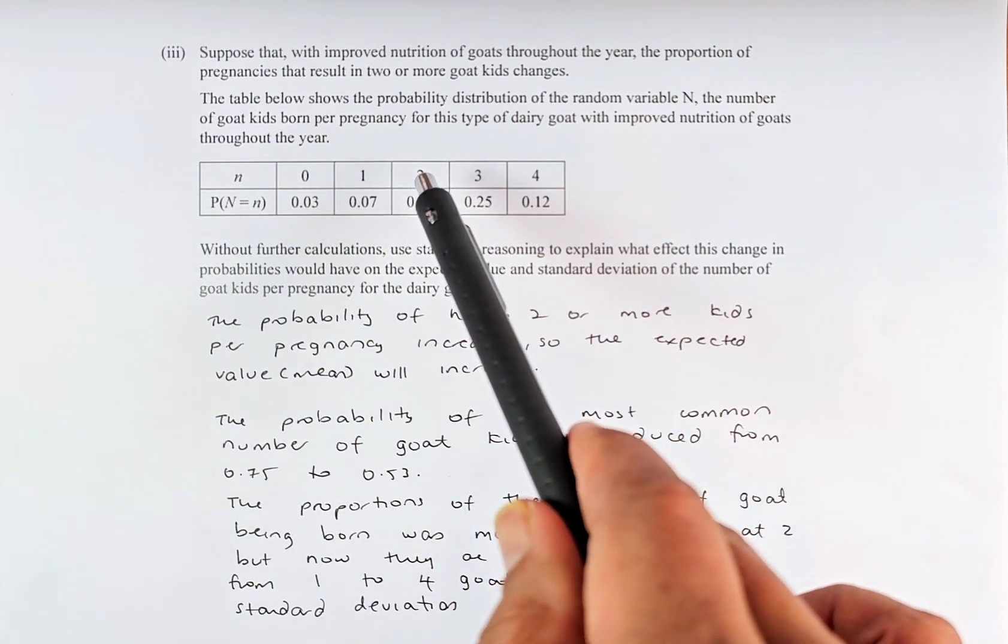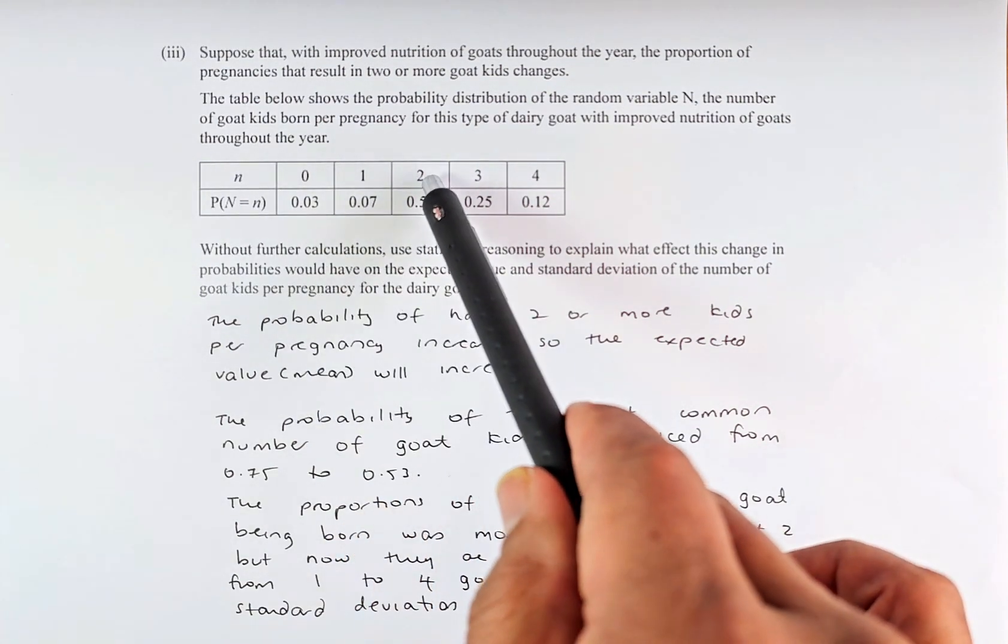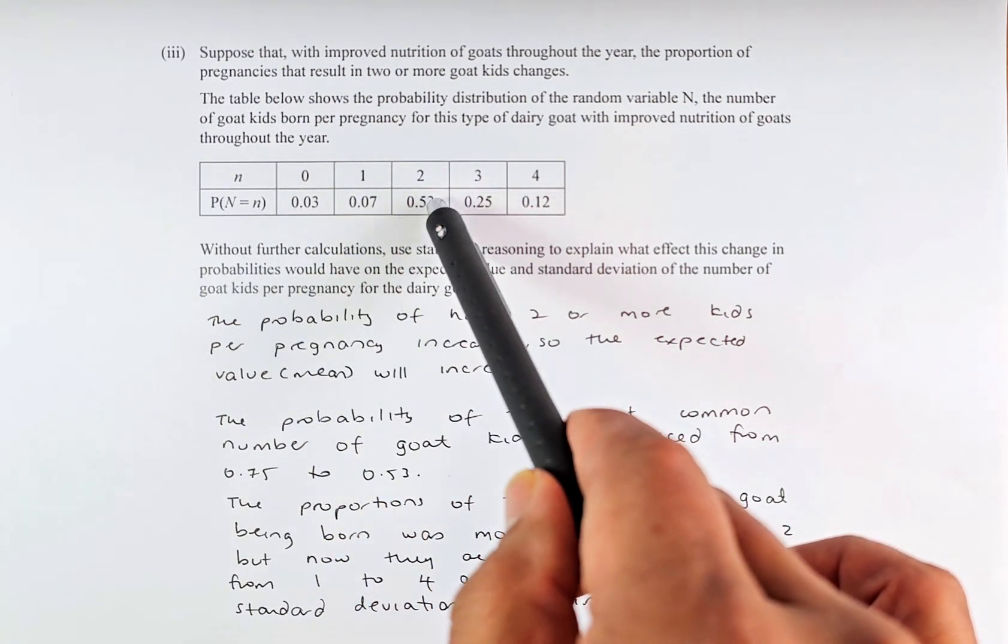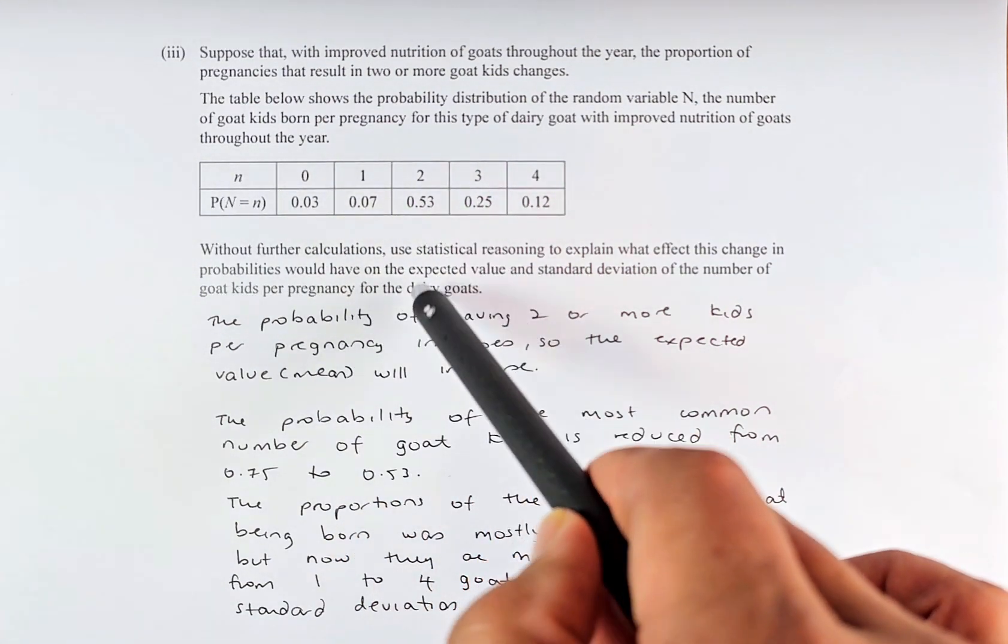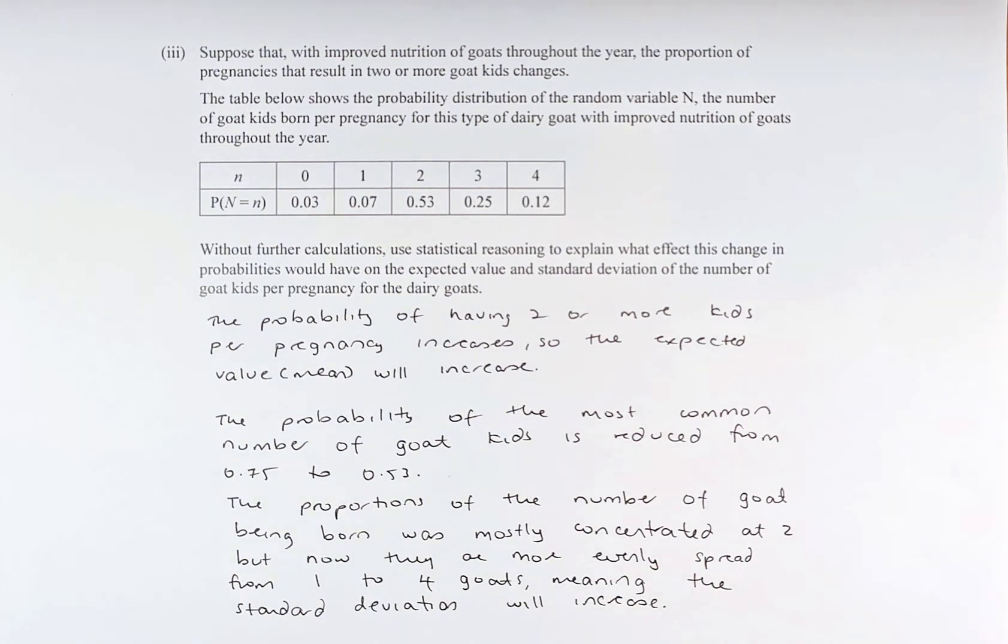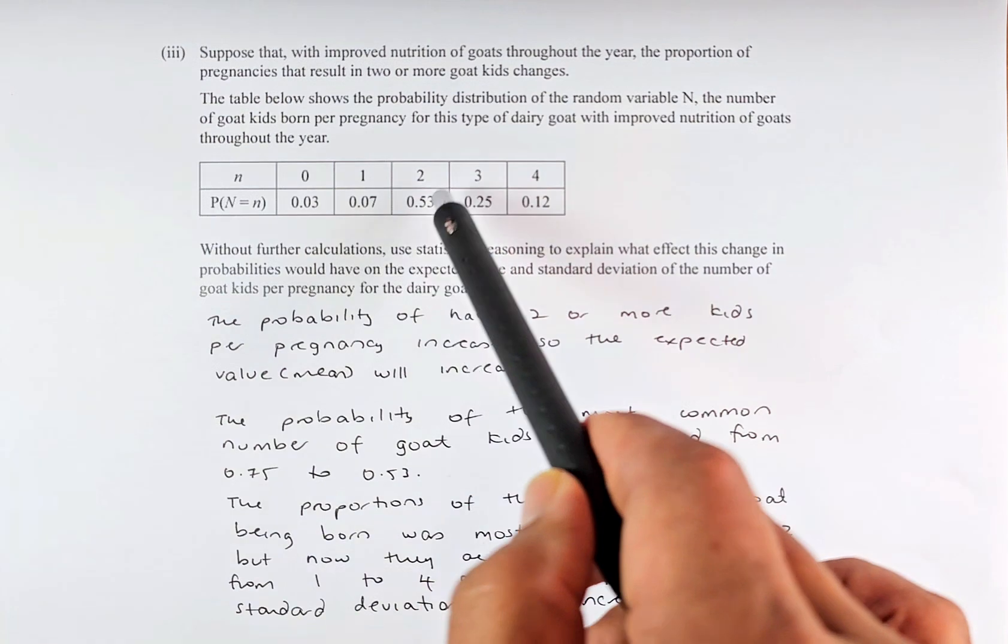So that means the first table will show you that it has 0.75 and now it is 0.53. So that means the number is at 2. So if you look at 2, but now they are more evenly spread.